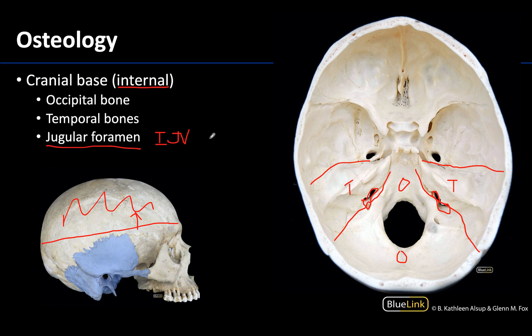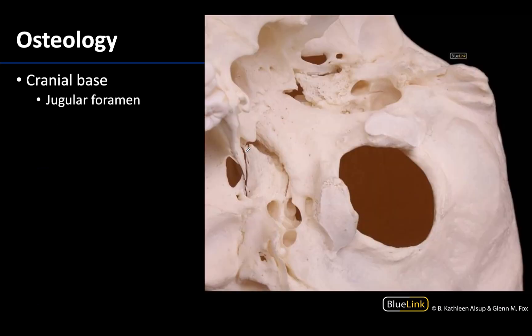The jugular foramen forms around what is called your IJV or internal jugular vein. That variable pressure of the vein is the reason why you have this irregular shape of the foramen. In addition to the IJV, you're going to have three cranial nerves that also traverse the jugular foramen to exit the skull. Of most importance to this session is the accessory nerve or cranial nerve 11, which will efferently innervate your sternocleidomastoid as well as your trapezius muscles. Here is an inferior lateral view showing that irregularly shaped jugular foramen alongside the foramen magnum.